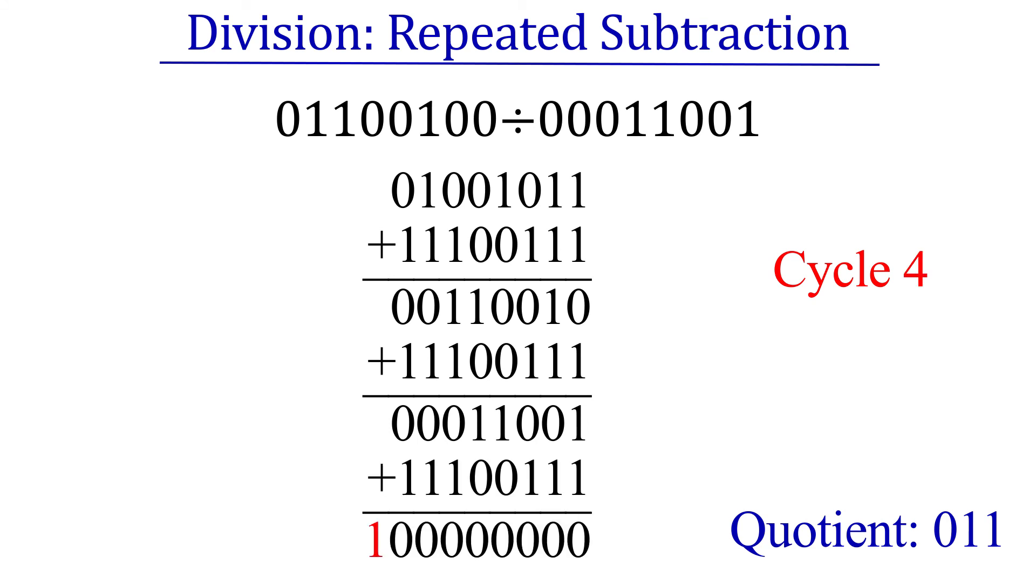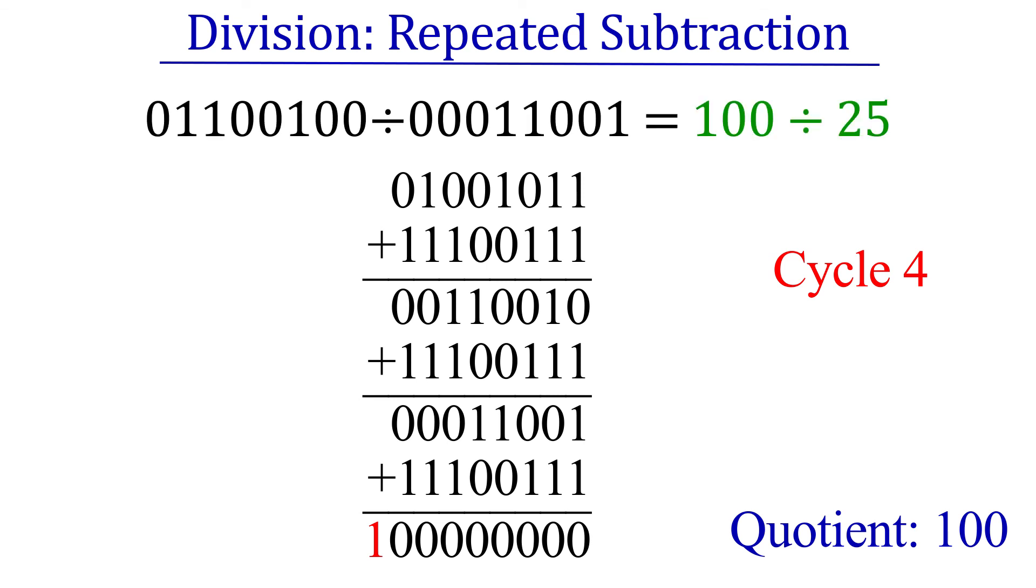Boom! We now have a zero remainder, so our quotient gets bumped up by one one last time and our work is done. The answer is one hundred, or four in decimal. And that's good, because the numbers we divided were one hundred divided by twenty-five.